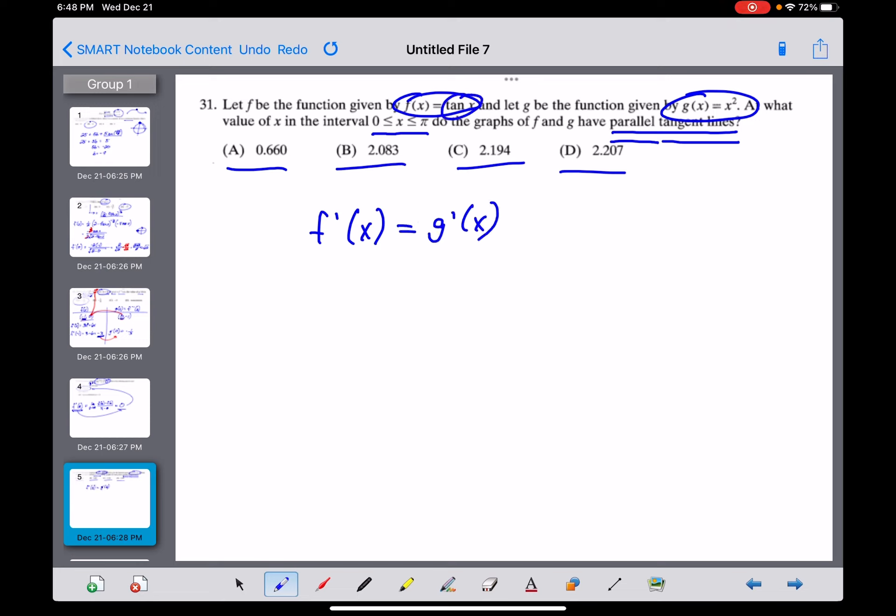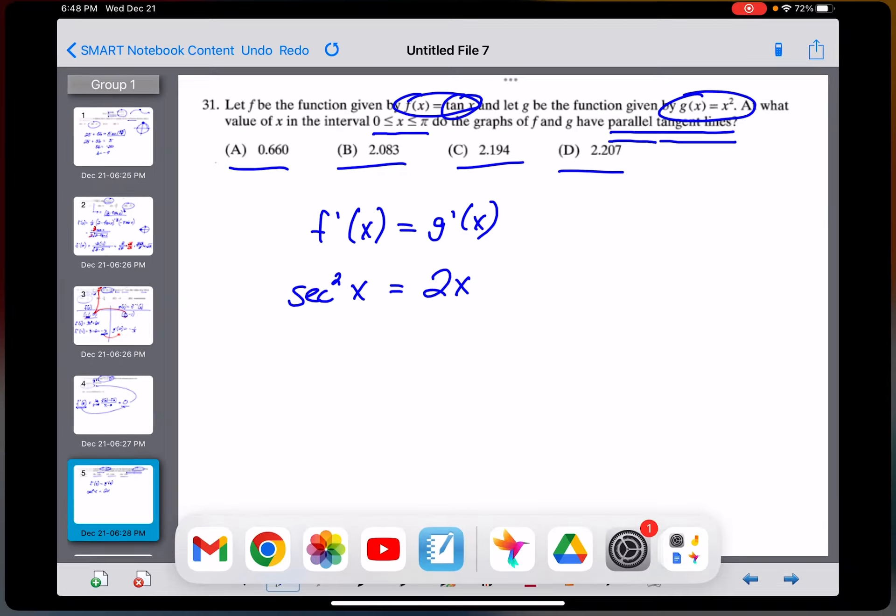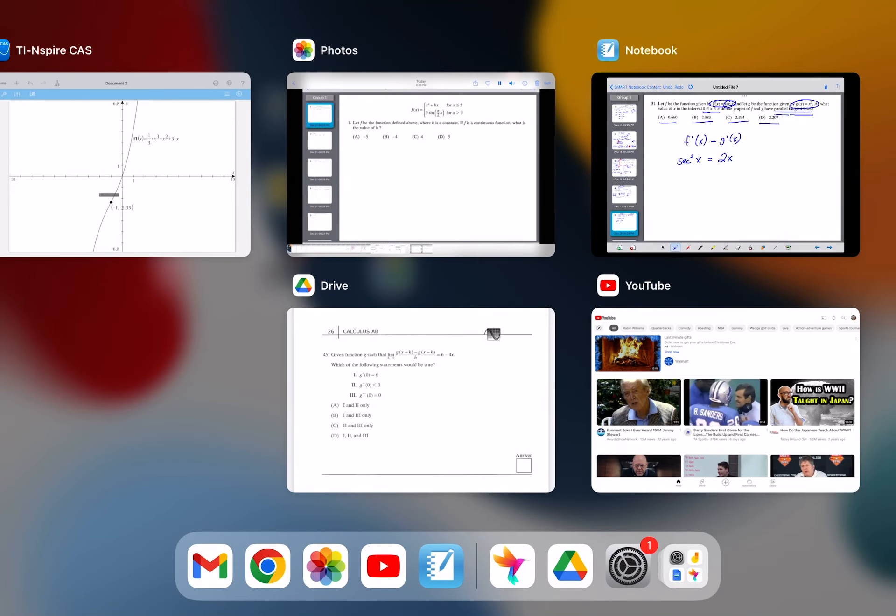Let's find those derivatives. The derivative of tangent of x is secant squared of x, and on the right side, the derivative of x squared is just going to be 2x. Given the fact that these answers look irrational and I don't think I know how to solve this equation by hand, I'm going to go to my calculator and ask it to solve that for us.